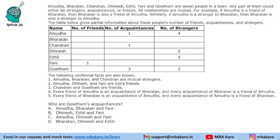Welcome to Aptitude Jab. This set from CAT 2021 Slot 1 DILR says that there are 7 people — you can call them A to G — in a town.